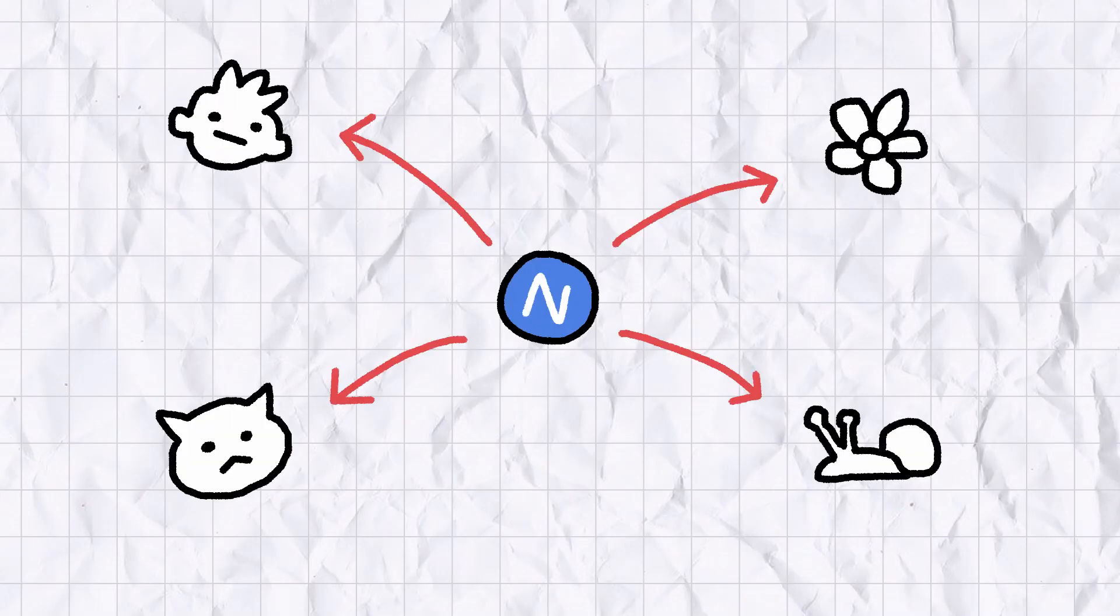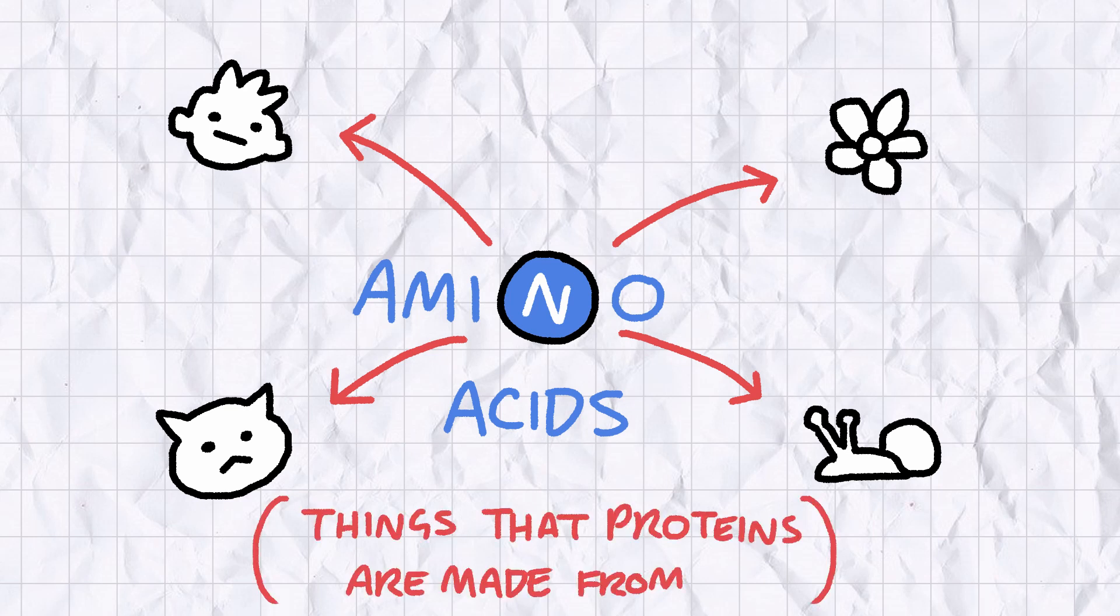Nitrogen can be found in all living creatures predominantly as a component in amino acids, simple organic compounds that act as the chemical building blocks for proteins.